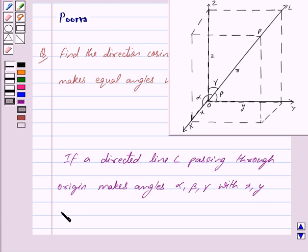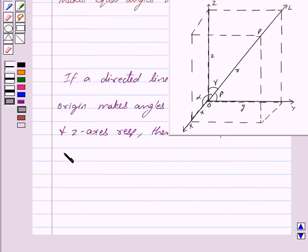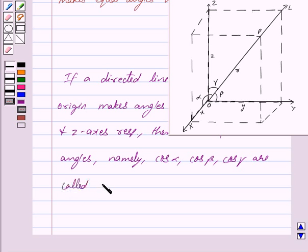then cosines of these angles, namely cos alpha, cos beta and cos gamma, are called direction cosines of the directed line L.